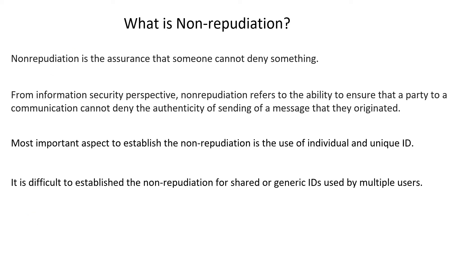Let us discuss another important concept of non-repudiation. In simple language, non-repudiation is the assurance that someone cannot deny something. From an information security perspective, non-repudiation is the ability to ensure that a party to a communication cannot deny the authenticity of a message that they originated. The most important aspect to establish non-repudiation is to have an individual and unique ID — if shared or generic IDs are used, the principle of non-repudiation is difficult to establish.